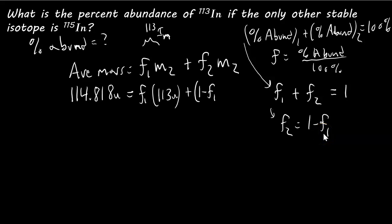Now, we don't know what F2 is, but we can solve for F2 in terms of F1. So, if we use this equation here, we solve for F2, F2 equals 1 minus F1, and we'll plug that in. So F2 equals 1 minus F1, that's what F2 is. And, the mass of the second isotope is 115.